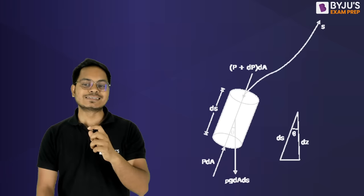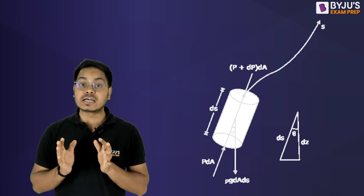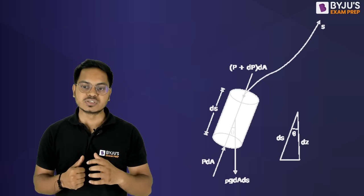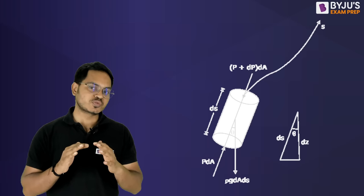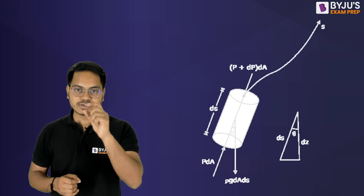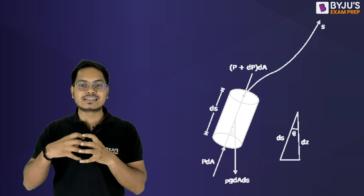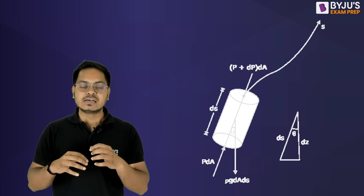Let's consider a streamline and take a cylindrical element along it. On this cylinder, we consider two forces to find the Euler equation: the pressure force and the gravitational force. There will be a pressure force acting on the cross-sectional area of the cylinder — pressure always acts normal to the surface. From below, we get p·dA, where p is pressure and dA is the cross-sectional area. At a distance ds along the cylinder length, the pressure becomes p + dp, acting on dA.